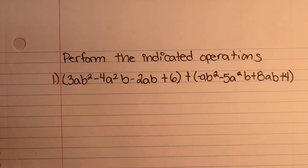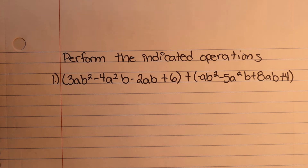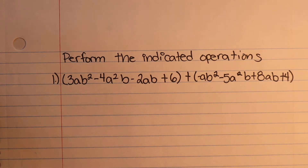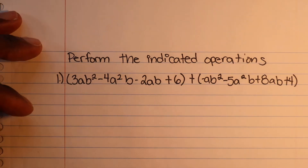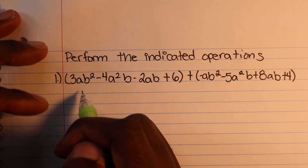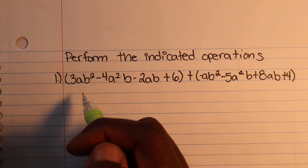Question one: perform the indicated operation. In this segment I'm doing part 1, part 2, maybe part 3. What we're focusing on in part 1 right now is adding and subtracting like terms. One way to think about it — basically, all we're doing is taking apples to apples and combining them together.